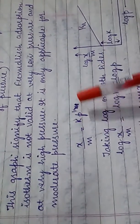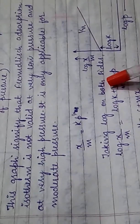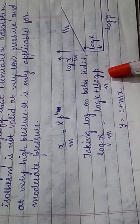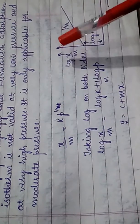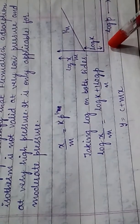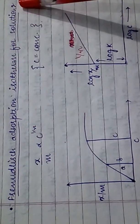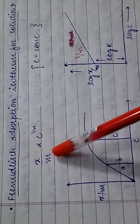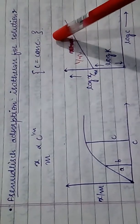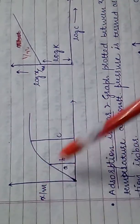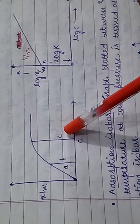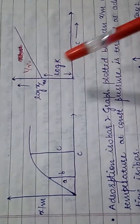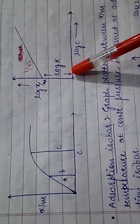We know x/m = k·P^(1/n). Taking log on both sides, we get log(x/m) = log k + (1/n)·log P. Comparing it with y = c + mx, we get a graph plotted between log(x/m) and log P, where 1/n is the slope and log k is the y-intercept. For a solution, it is: x/m ∝ C^(1/n), where C is concentration. Similarly, the graph of log(x/m) versus log C gives 1/n as slope and log k as y-intercept.